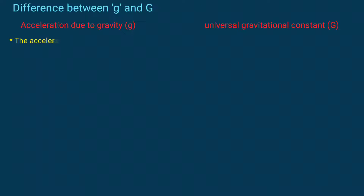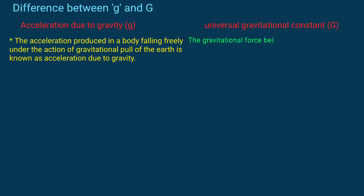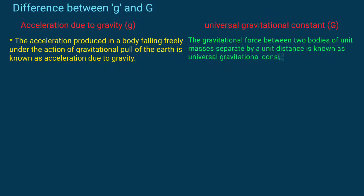The acceleration produced in a body falling freely under the action of gravitational pull of the earth is known as acceleration due to gravity. The gravitational force between two bodies of unit mass separated by a unit distance is known as universal gravitational constant.